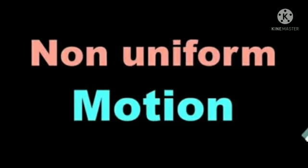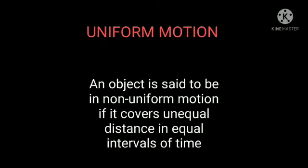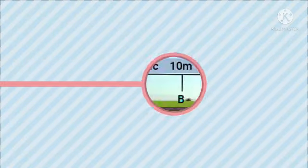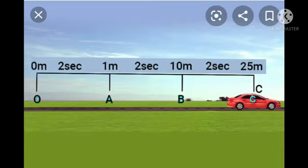Next, Non-Uniform Motion. An object is said to be in non-uniform motion if it covers unequal distance in equal intervals of time. In this picture, we can see that the car travelled 1 meter in 2 seconds and 10 meters in 2 seconds and 25 meters in 2 seconds. The car travelled unequal distance in equal intervals of time. So, we can say that the car performed non-uniform motion.